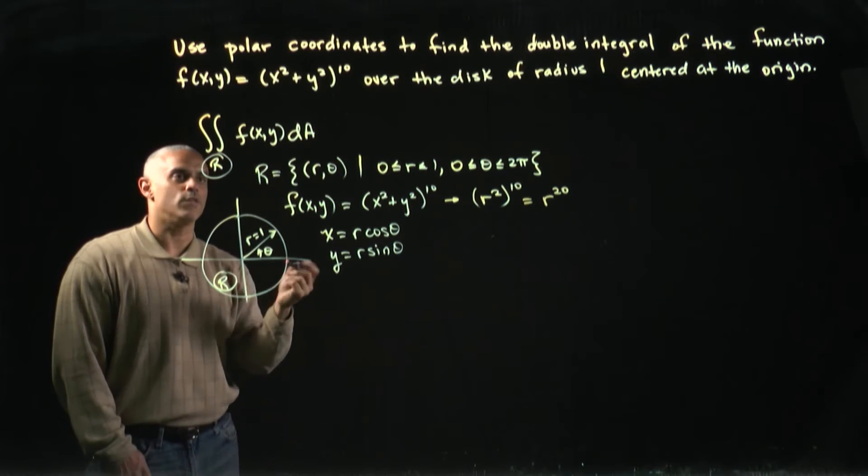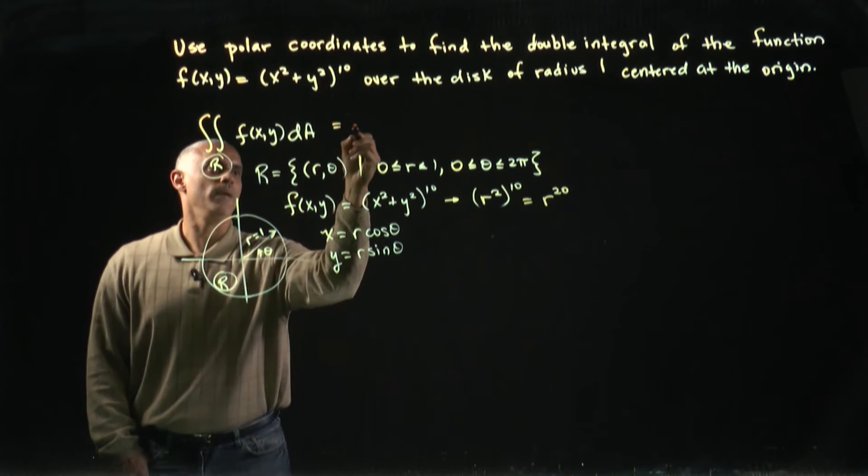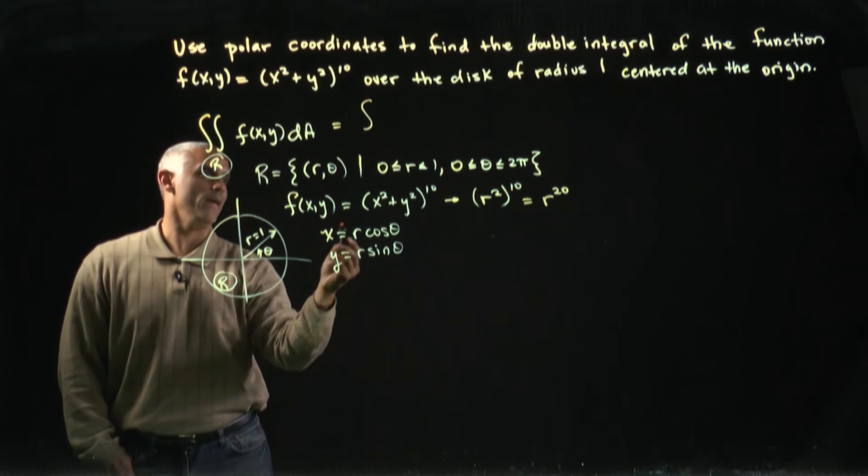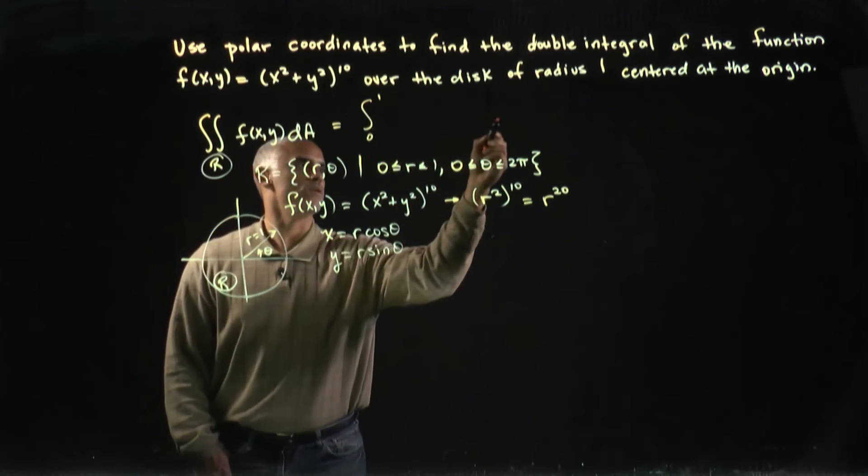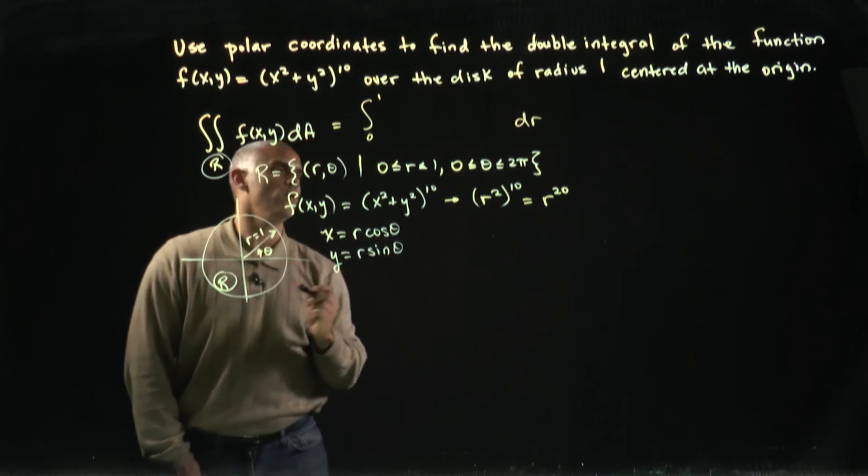Now we're ready to solve the problem. I'm able to write in my limits. I'm going to let r vary from zero to one, and since this is on r, I'll put my dr on the outside.